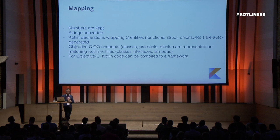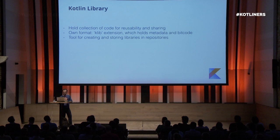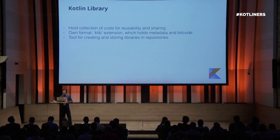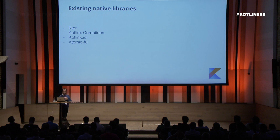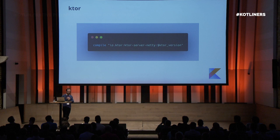Something interesting: for Objective-C, everything will be compiled into an iOS framework that can be imported directly into our iOS app. We also have the Kotlin library format — similar to how a Java library works — which holds a collection of code for reusability and sharing, with a .klib format that holds all the metadata and the bitcode itself. No technology means anything without libraries. There are a few developed by JetBrains: Ktor for client-server networking, a atomic helper, KotlinX.IO for I/O operations, and the famous coroutines. I particularly like Ktor — if you're developing anything with the backend, it's pretty simple and does the job very well.